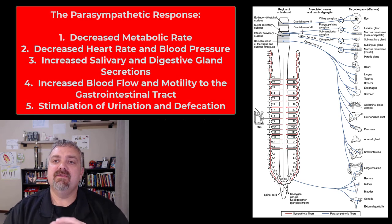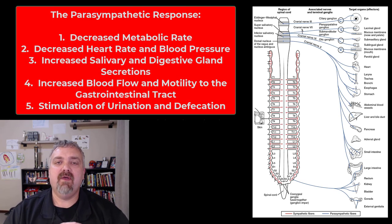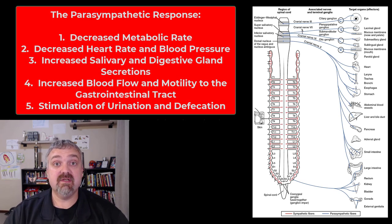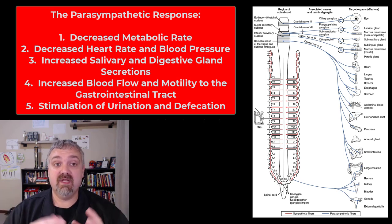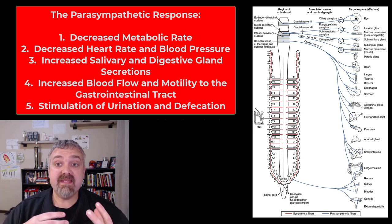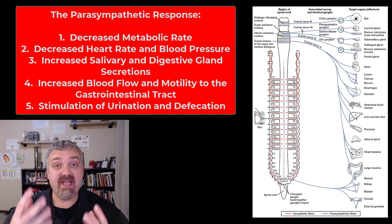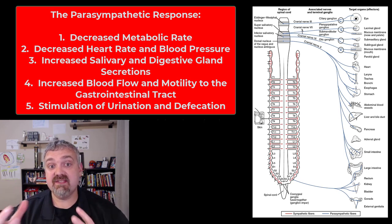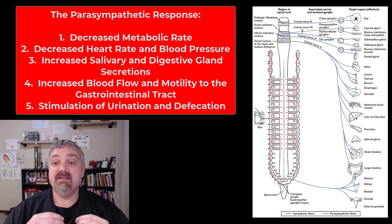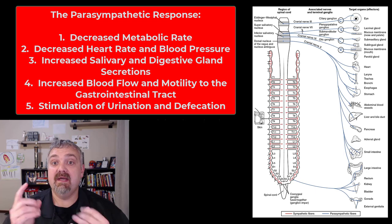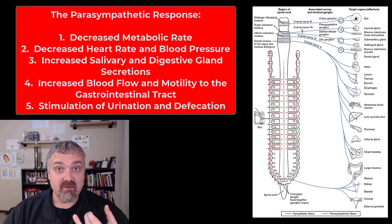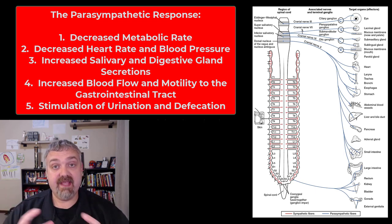Hey everybody, Dr. O here. In this video, we're going to talk about the function of the parasympathetic division of the autonomic nervous system. I'm going to look at it broadly and then get more specific. With parasympathetic activation — when your rest and digest system kicks in — you're basically going to see a decrease in metabolic rate because your body's trying to conserve energy and rebuild.